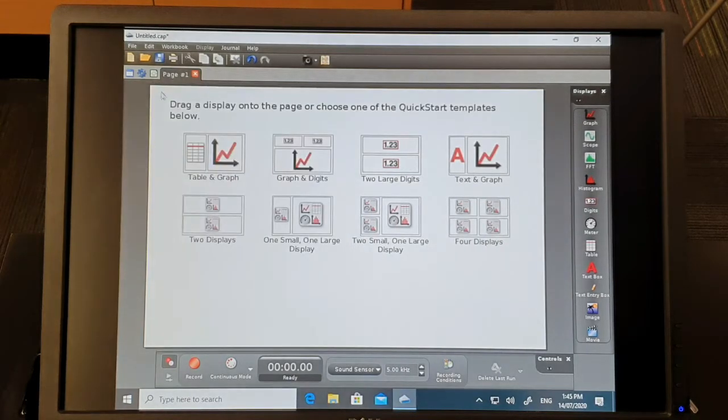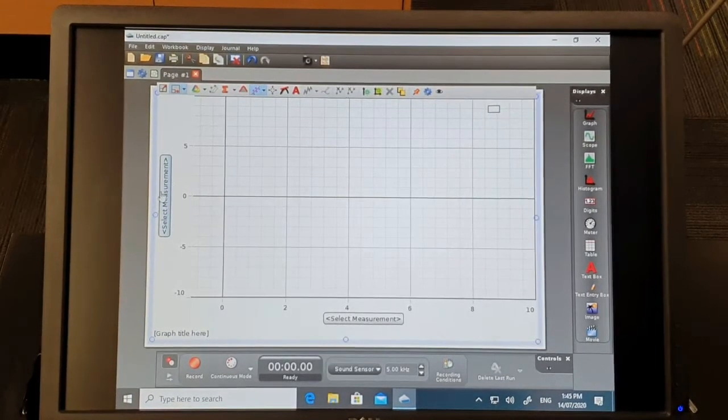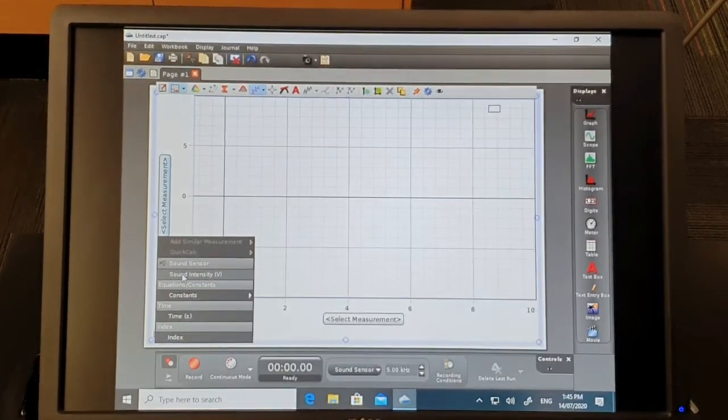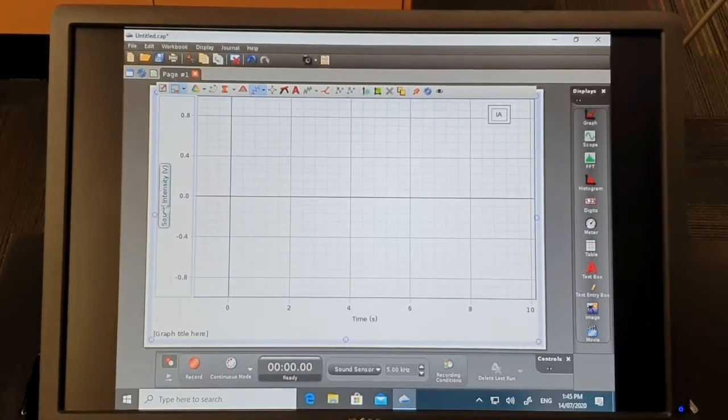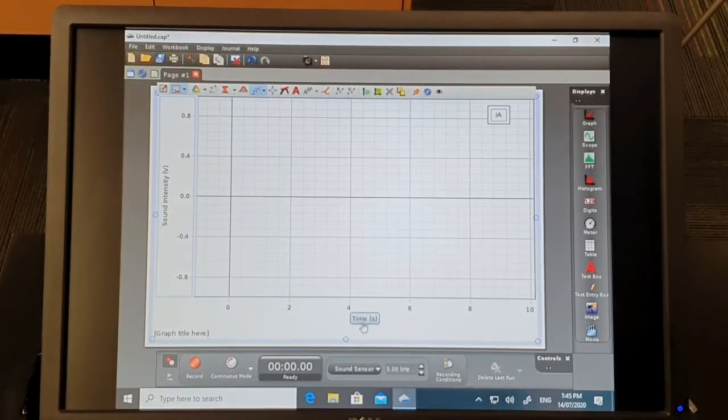I want to graph the sound as it comes in, so I'm going to give two clicks to this icon over here. Go to here to select measurement and click Sound Intensity. Notice now I've got Sound Intensity here and Time here.